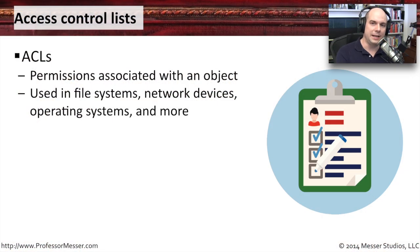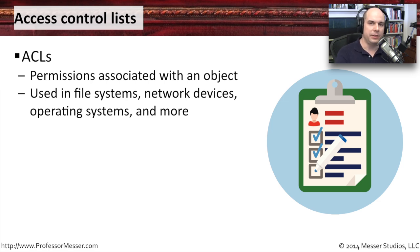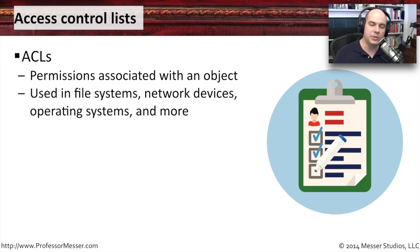Another way to allow or disallow access to resources is through something called an access control list. You may hear this referred to as ACLs. Access control lists are things that you would assign to an object or a network that would allow permission to that object or that network.